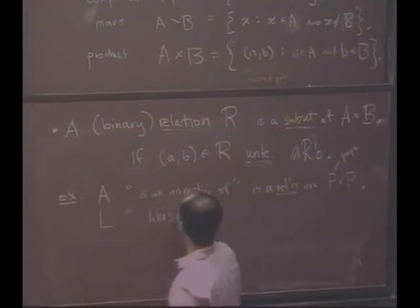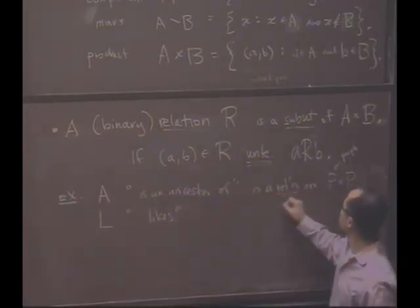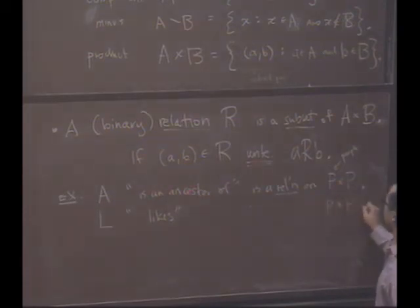L, the relation to like somebody, is also a relation on P cross P. It's a different one, right? Because you might not like your mother. But if you look at the set of all people, and you look at ordered pairs of people, I might ask, is the pair Bonnie and Jenny in the relation A? Does Bonnie A Jenny? No. But does Bonnie L Jenny? We hope so. That's the right answer in this audience, right?